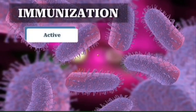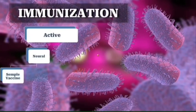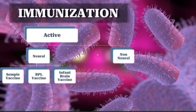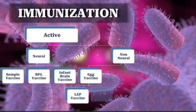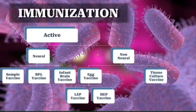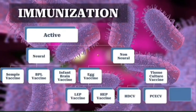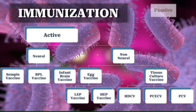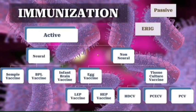Immunization. Anti-rabic vaccines are of two types: neural and non-neural. Of these, only the non-neural vaccines — human diploid cell vaccine, purified chick embryo cell vaccine, and purified Vero cell vaccine — are currently used. Passive immunization is provided by equine rabies immunoglobulins, extracted from hyperimmune horses, and human rabies immunoglobulin, which is more commonly used.